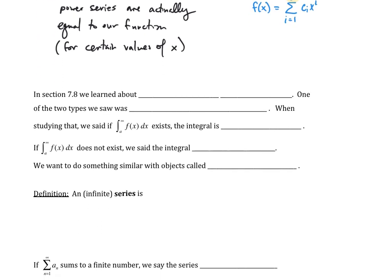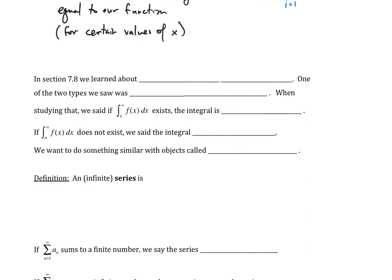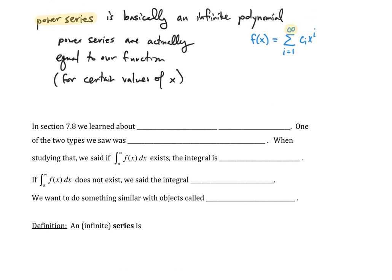So I want to remind you that we had studied something in chapter 7.8. In 7.8, we had learned about improper integrals. And there were two types of improper integrals. One of the two types was type 1, which is what I call the horizontal case.